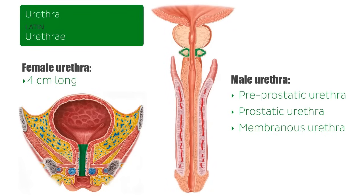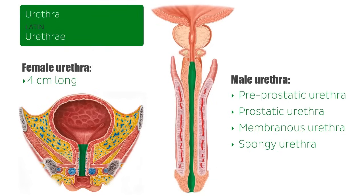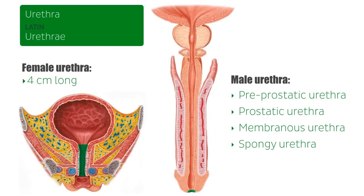The spongy urethra, also referred to as the penile urethra, is the final portion of the male urethra and is continuous with the membranous urethra. This part is the longest at about 15 centimeters and contains the external urethral orifice.